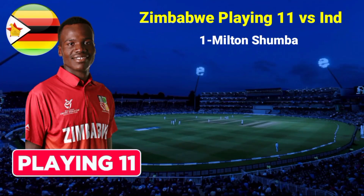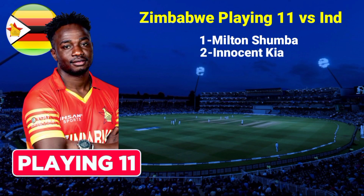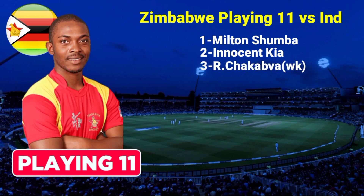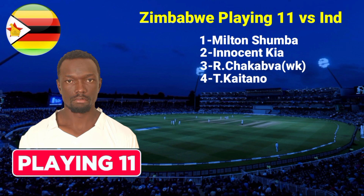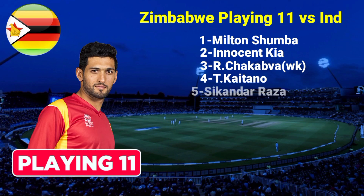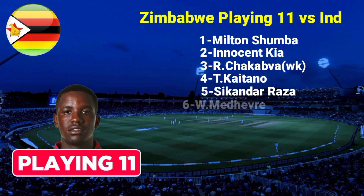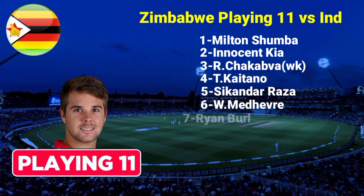Zimbabwe Team Playing 11 vs India. No.1 Milton Shumba, Right Hand Batsman. No.2 Innocent Kaia, Right Hand Batsman. No.3 Regis Chakabva, Wicket Keeper and Right Hand Batsman. No.4 T. Kaitano, Right Hand Batsman. No.5 Sikandar Raza, All Rounder. No.6 Wesley Madhevere, All Rounder.